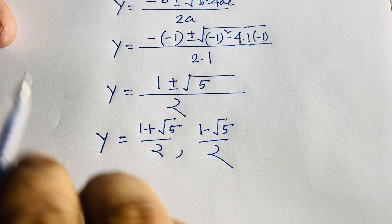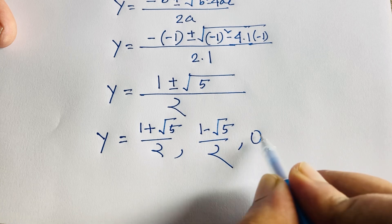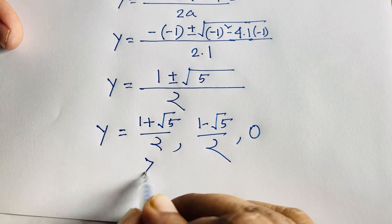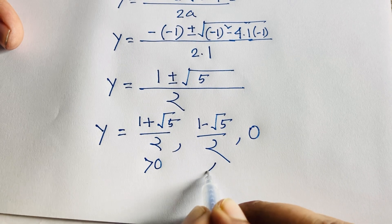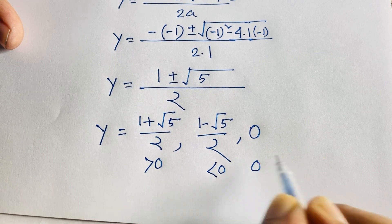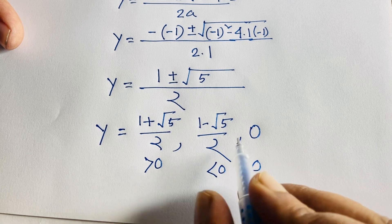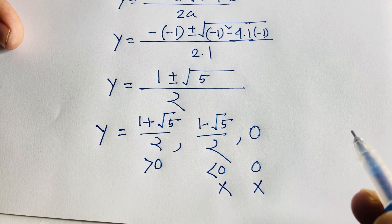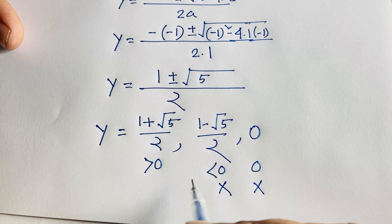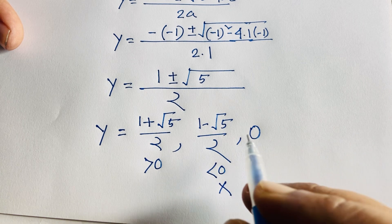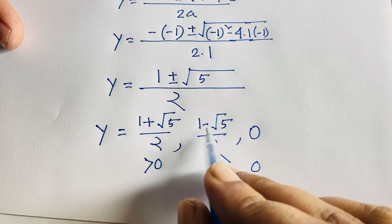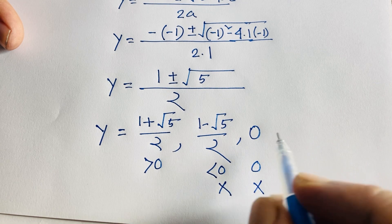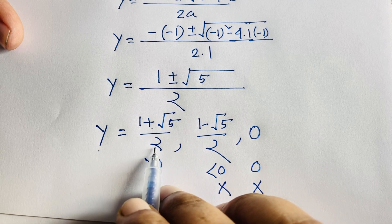We now have three values: y equals 0, y equals (1 plus √5)/2, and y equals (1 minus √5)/2. However, (1 minus √5)/2 is negative and y equals 0 must both be rejected, because we let y equal 10^x, and 10^x is always a positive value. So neither zero nor a negative value is valid.